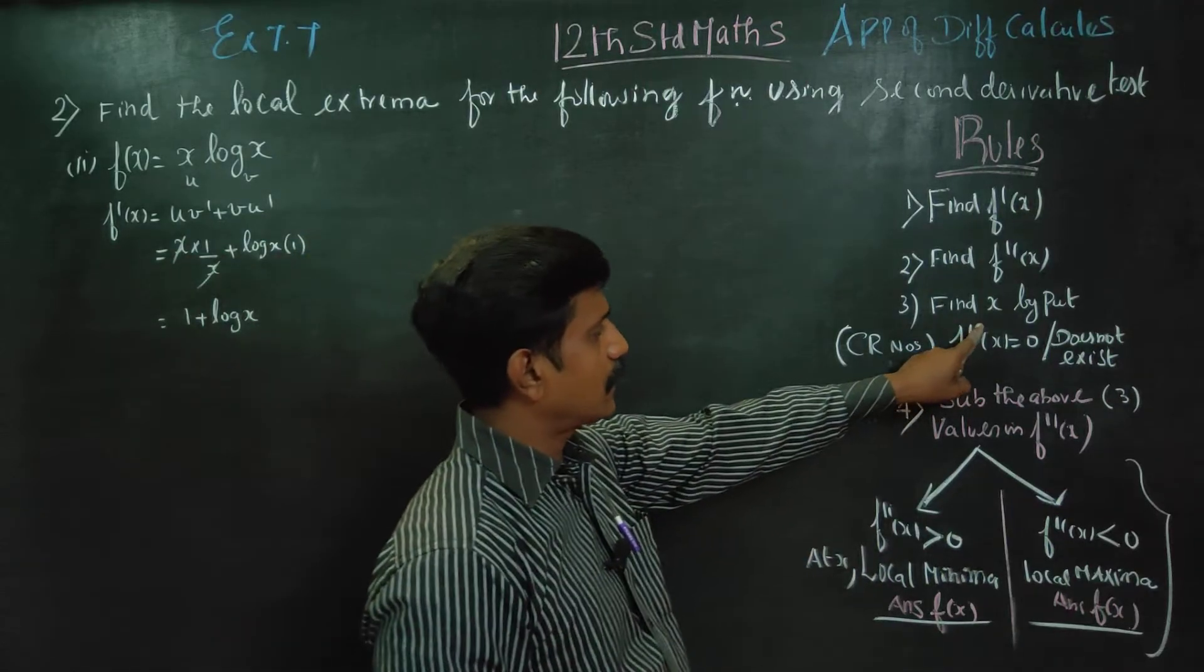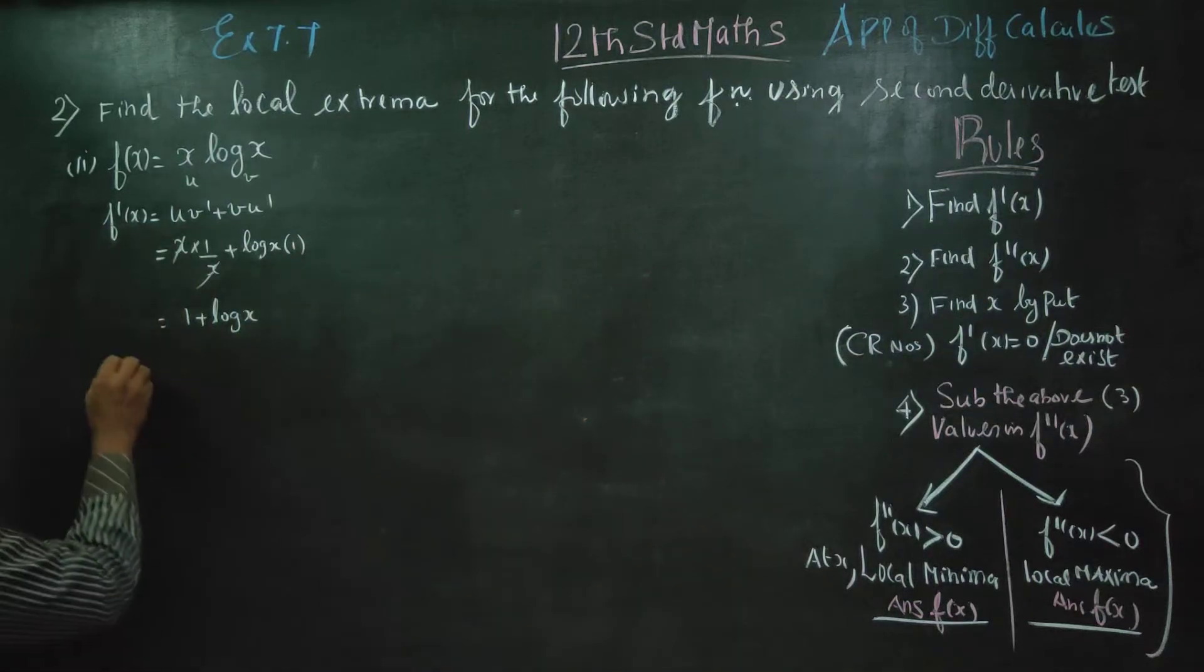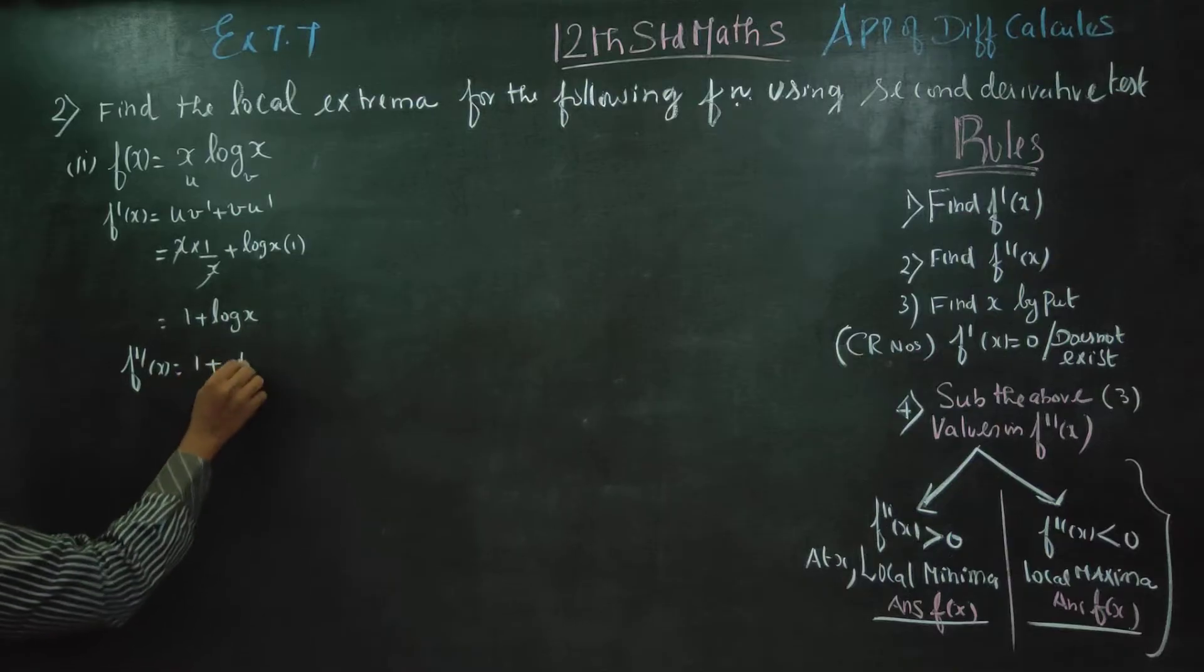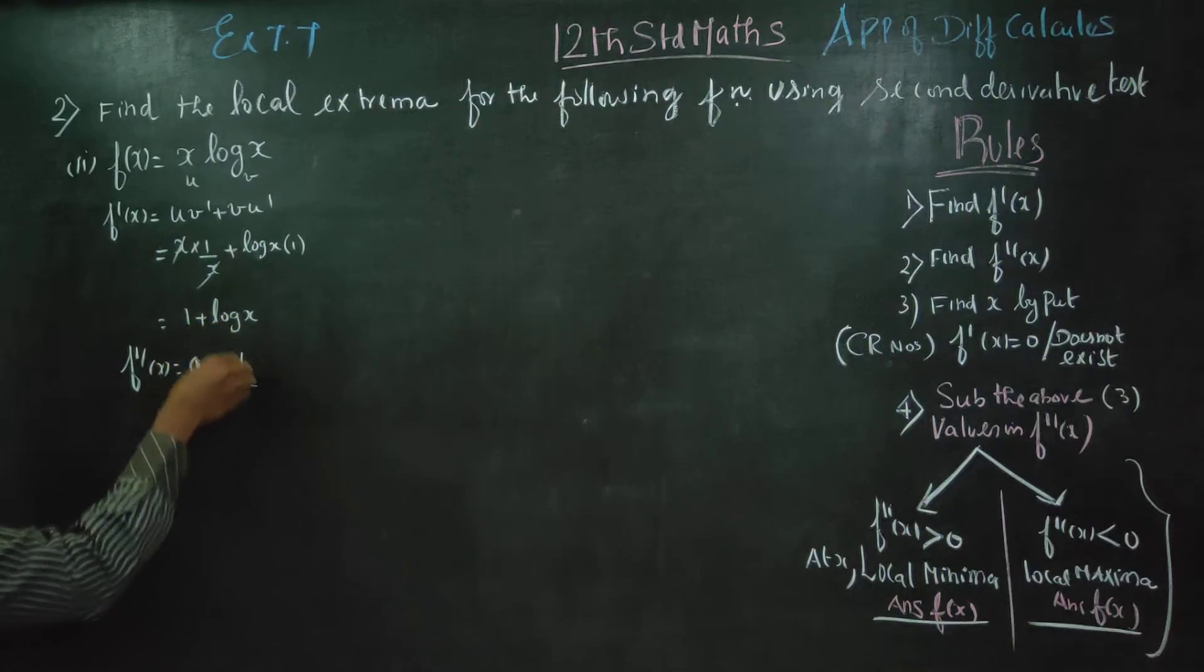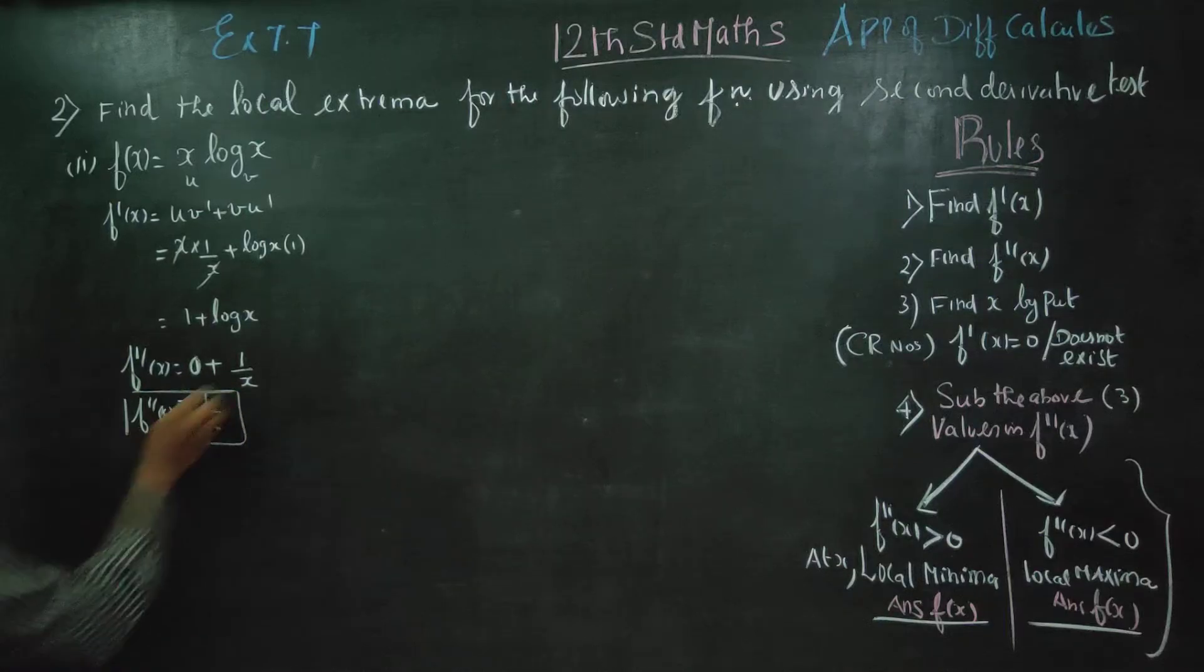The second step is to find f''(x). Differentiate 1 + log x. 1 differentiates to 0, log x differentiates to 1/x. Therefore your answer f''(x) = 1/x.